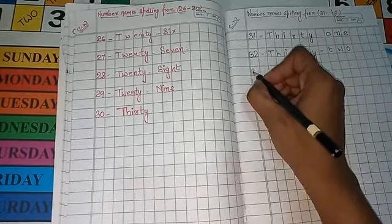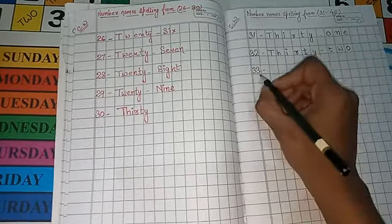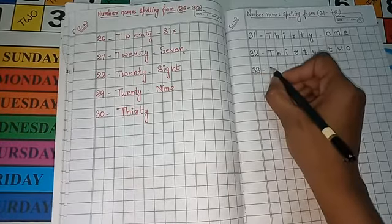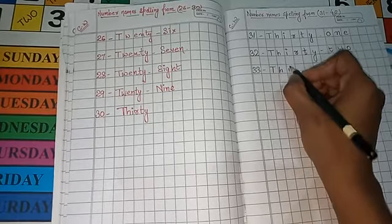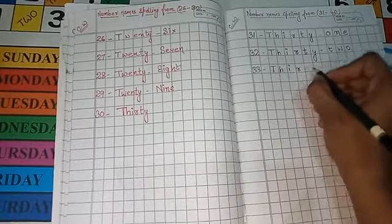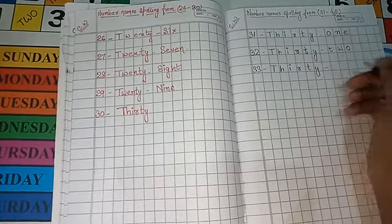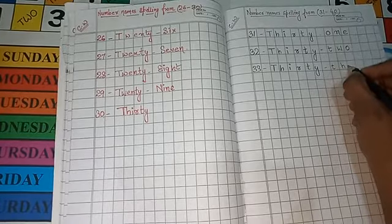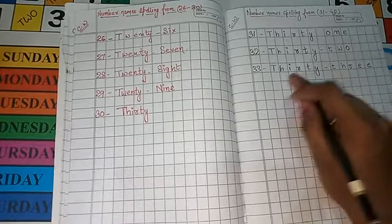Next, 33. The spelling of number 33 is T-H-I-R-T-Y, 33, T-H-R-E-E.